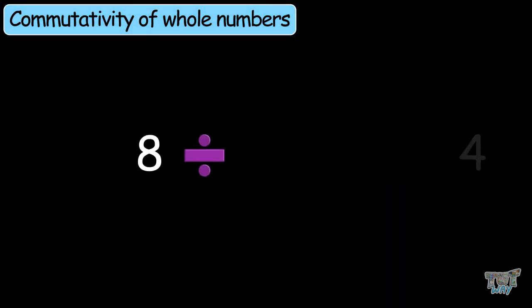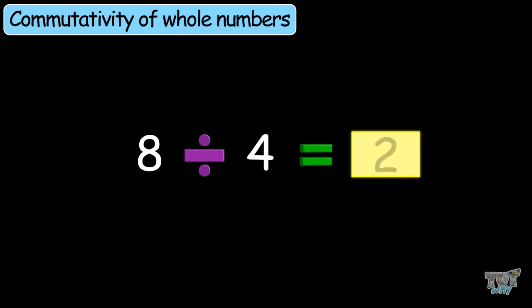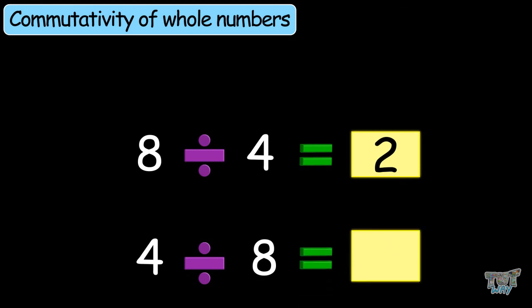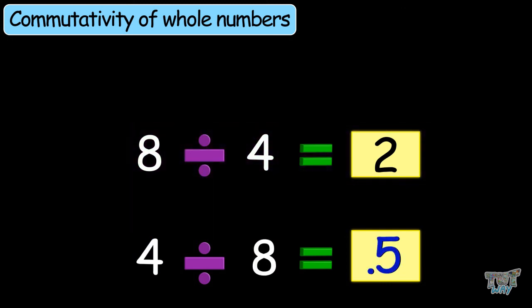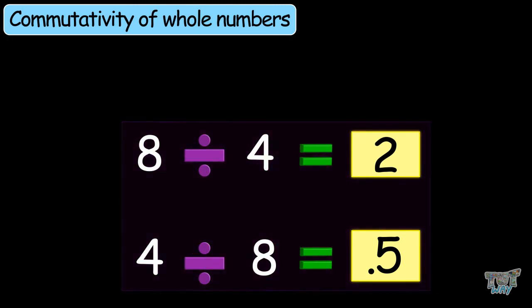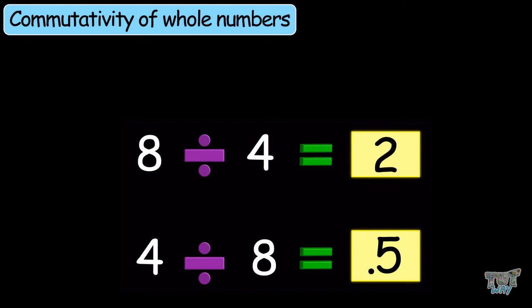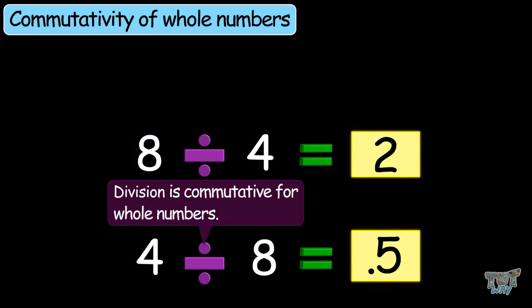8 divided by 4 — what's the answer? The answer is 2. Now 4 divided by 8 — what's the answer? The answer is 0.5. So the answers are different: 8 divided by 4 is 2 and 4 divided by 8 is 0.5. This depicts that division of whole numbers is not commutative. You cannot change the order of the numbers in the case of division — the answer will not be the same if the order changes.